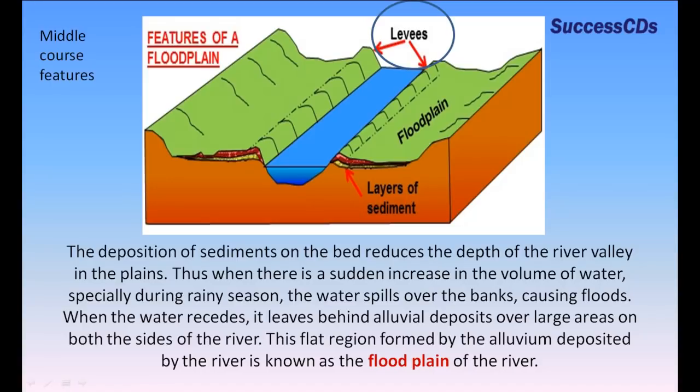When there is a sudden increase in the volume of water, especially during the rainy season, the water spills over the banks, causing floods. When the water recedes, it leaves behind alluvial deposits over large areas on both sides of the river. This flat region formed by the alluvium deposited by the river is known as the flood plain of the river.